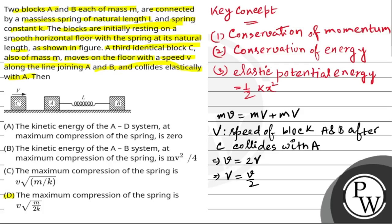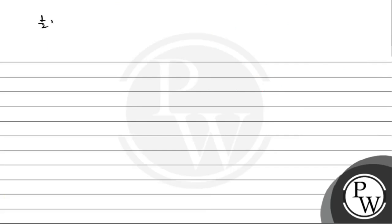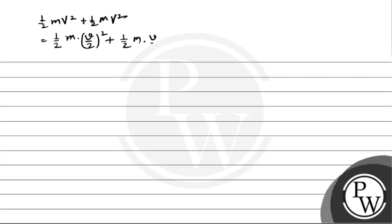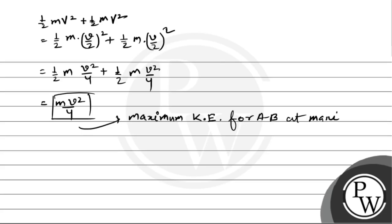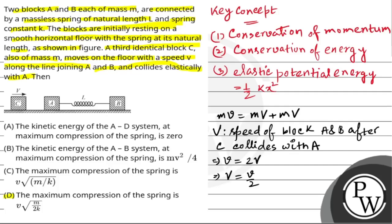Now we find the kinetic energy of the AB system at maximum compression of the spring, which is half·m·V² + half·m·V² = half·m·(v/2)² + half·m·(v/2)² = half·m·v²/4 + half·m·v²/4 = mv²/4. This is the maximum kinetic energy of the AB system at maximum compression. So option B also matches our conclusion — both option B and option D are correct. Hope you understood it well, good luck!